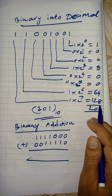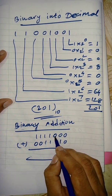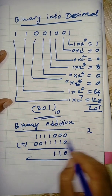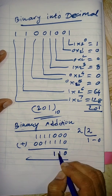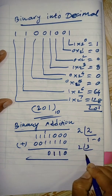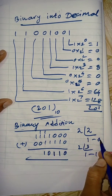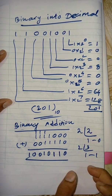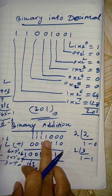Next, we look at binary addition. The rules for decimal addition apply similarly to binary. In binary: 0 + 0 = 0; 0 + 1 = 1; 1 + 1 = 2, but in binary, 2 is written as 10 (write 0, carry 1); and 1 + 1 + 1 = 3, which in binary is 11 (write 1, carry 1). Similarly, we have subtraction, multiplication, and division.